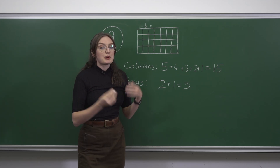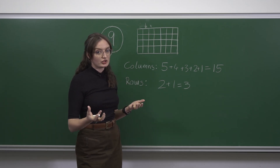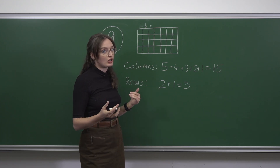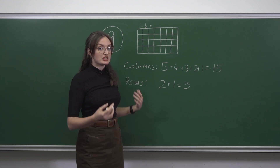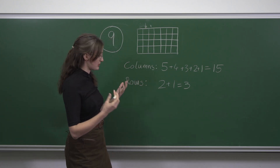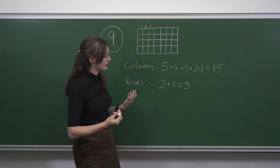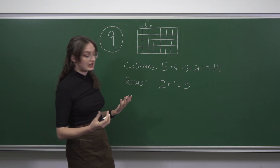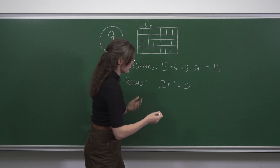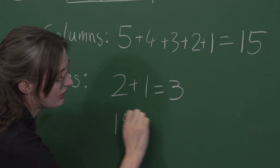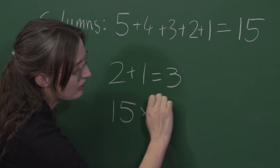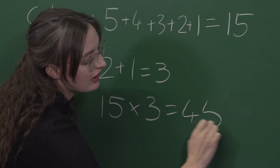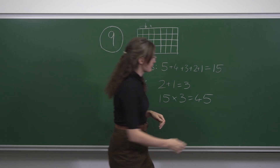How we pick a column doesn't affect how we can pick a row, and vice versa, so these are independent and we can multiply them together. The total number of ways of picking is 15 times 3, which is 45 — and that is option A.